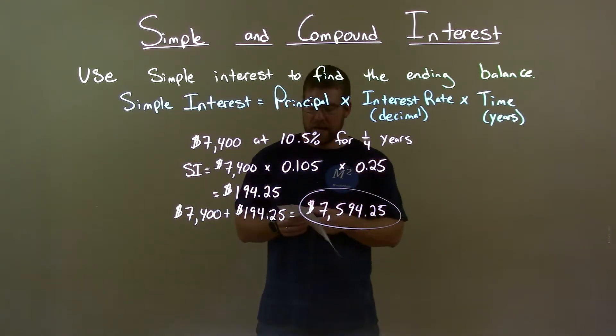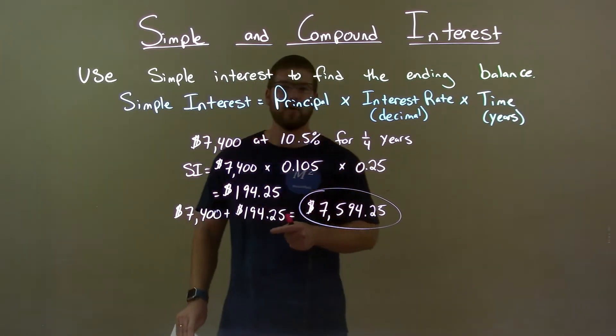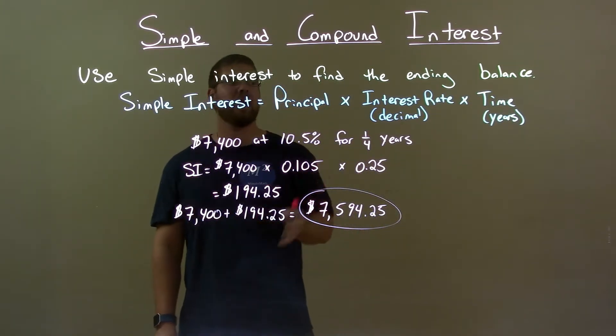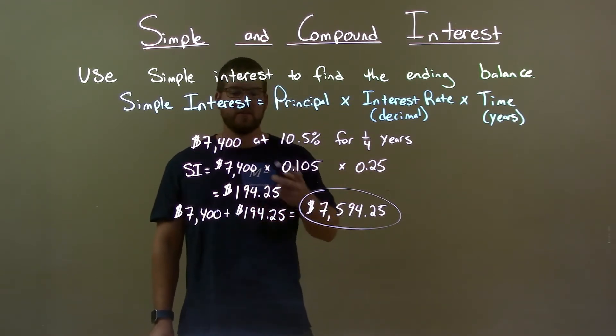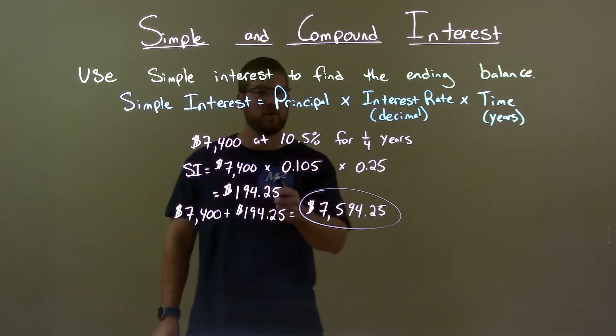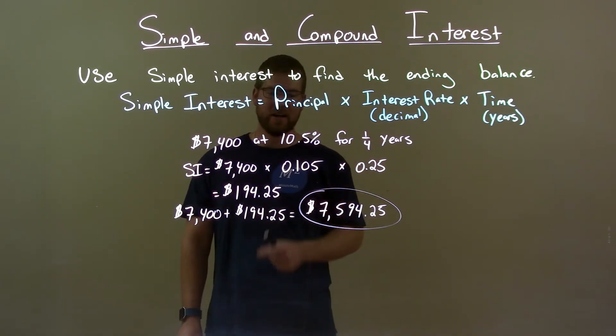Quick recap, we're given $7,400 at 10.5% for 1 quarter of a year, and we find the ending balance using simple interest. Simple interest formula tells us that that is $194.25. Add that to the principal to get our ending balance which is our final answer, $7,594.25.